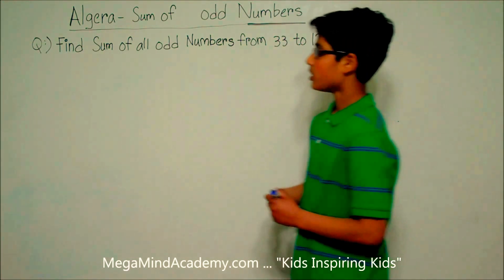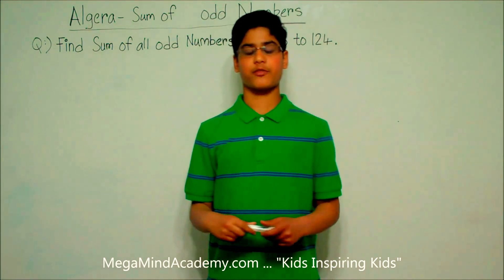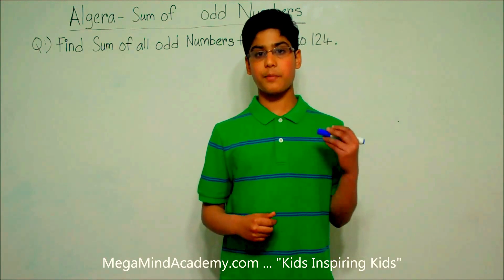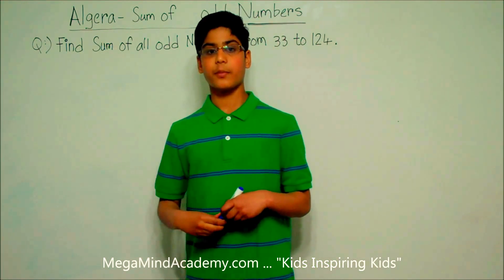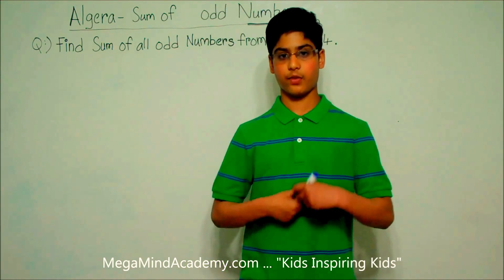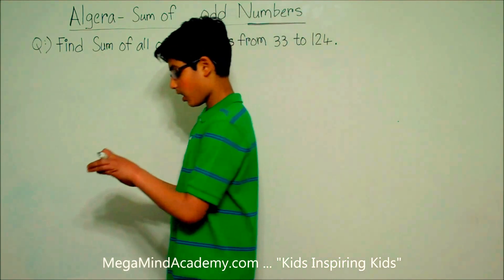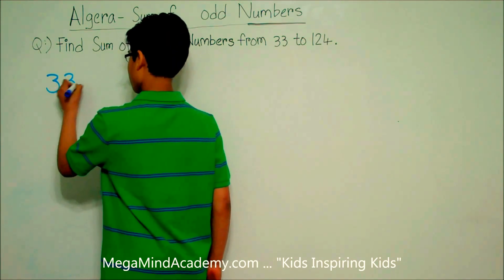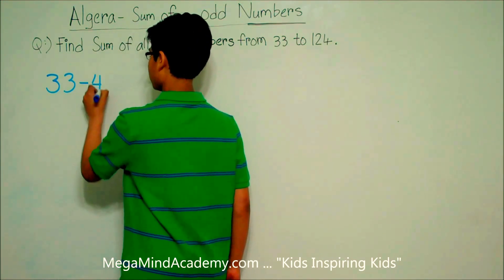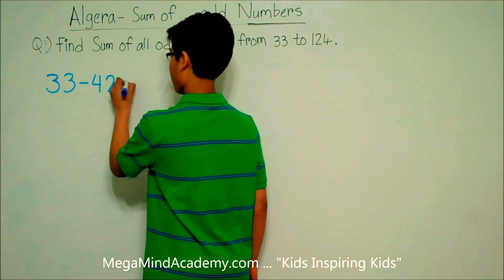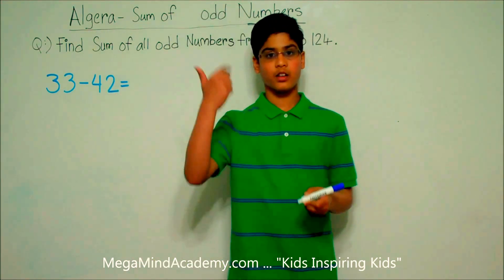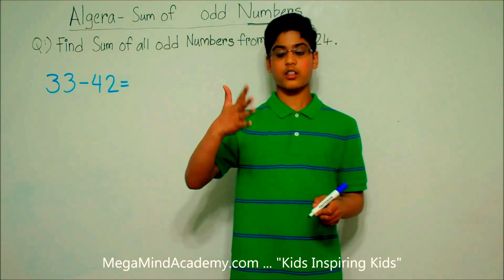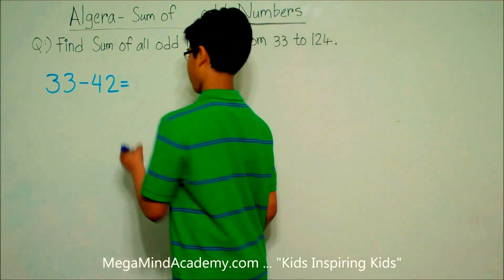Now, to find the sum of all the odd numbers from 33 to 124, we need to first find out how many odd numbers there are from 33 to 124. So, let's start with 33 to 42: there are 33, 35, 37, 39, and 41. So, 5 odd numbers.